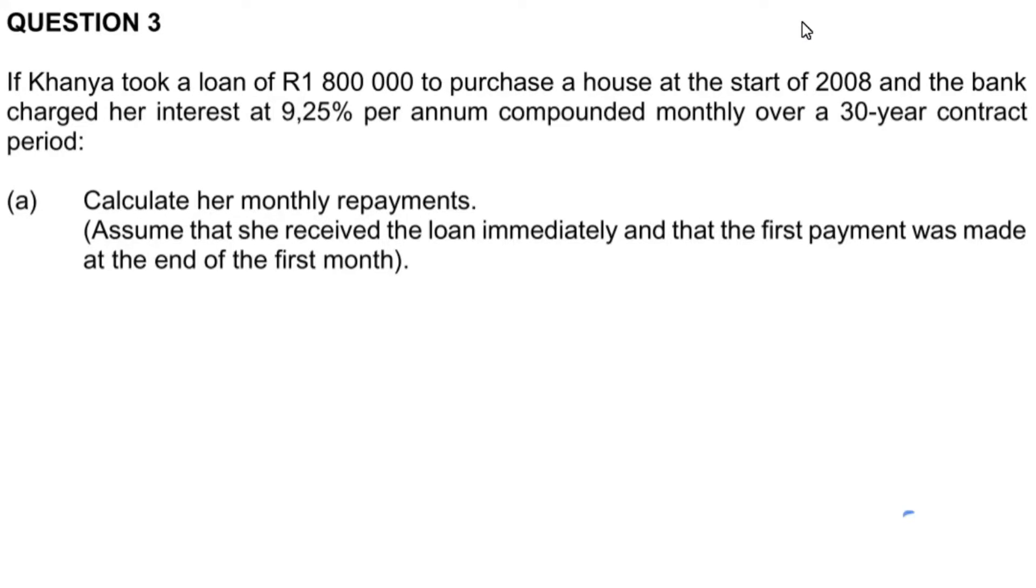This question says, if Carrier took a loan of 1.8 million rand to purchase a house at the start of 2008 and the bank charged her an interest of 9.25% per annum compounded monthly over a 30-year contract period, calculate her monthly repayment. We need to assume that she received the loan immediately and the first payment was made at the end of the first month.